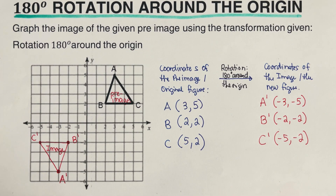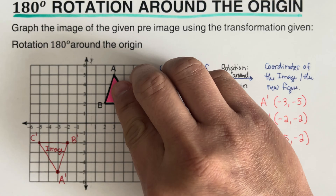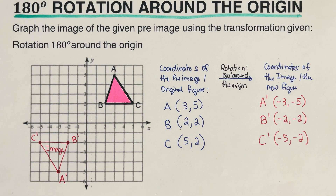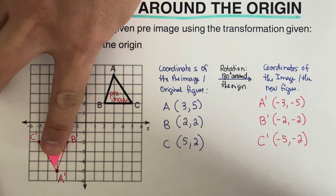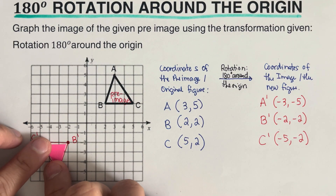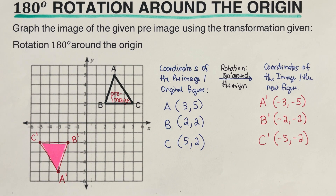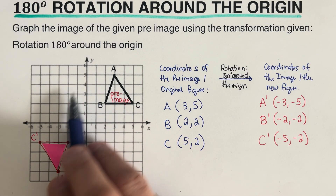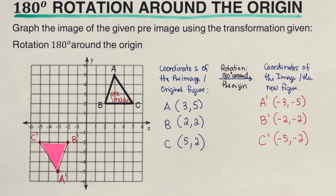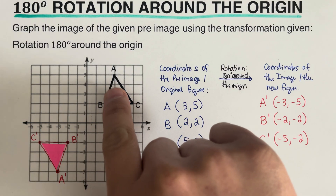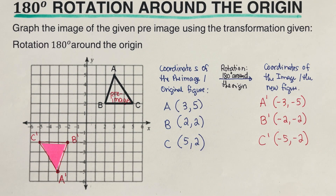What's happening here is that we're rotating this triangle around the point of origin — it doesn't matter if it's counterclockwise or clockwise. After rotating, the triangle lands in its new position. Point A on the pre-image becomes A prime on the image, and correspondingly B and C map to B prime and C prime. That's how we rotate 180 degrees around the origin.